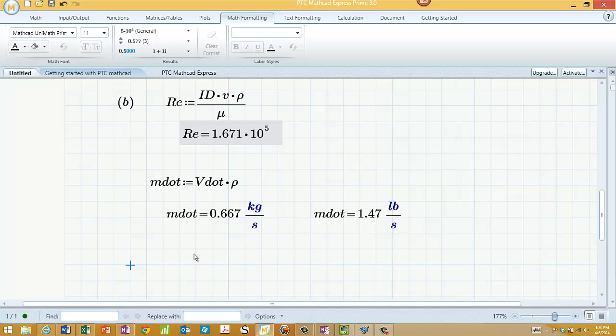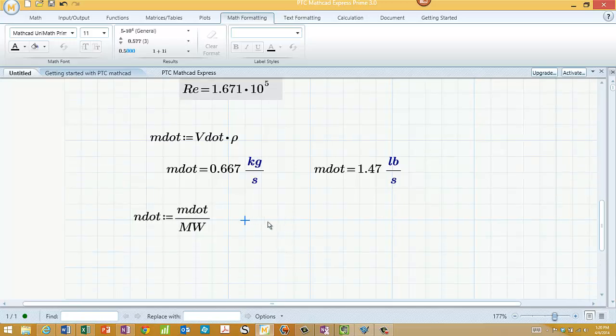And we can go here and say that the molar flow rate, N dot, is just equal to M dot divided by MW. N dot equals. Gives us in moles per second. If we tried to do pound moles per second, it would turn red, because it doesn't know what a pound mole is.